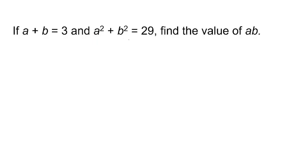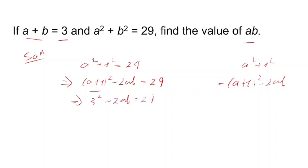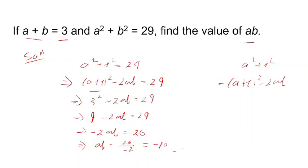Given a plus b equals 3 and a² plus b² equals 29, find the value of ab. We know a² + b² = (a+b)² − 2ab, so 29 = 3² − 2ab, which gives 9 − 2ab = 29, so minus 2ab = 29 minus 9 = 20, therefore ab equals minus 10.